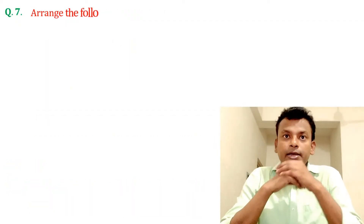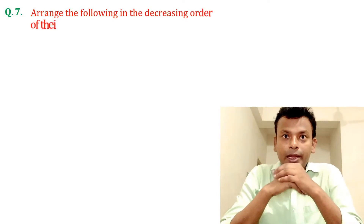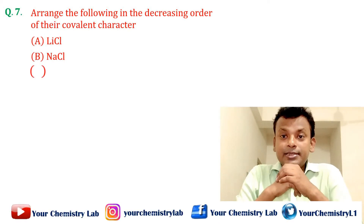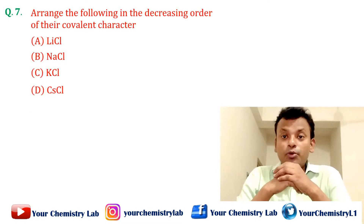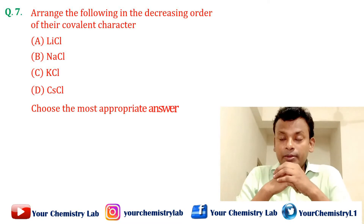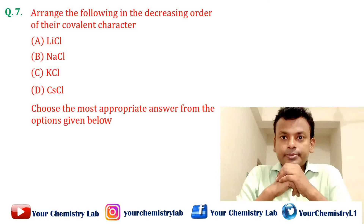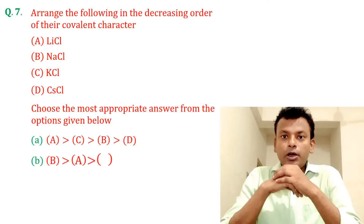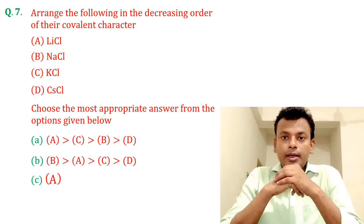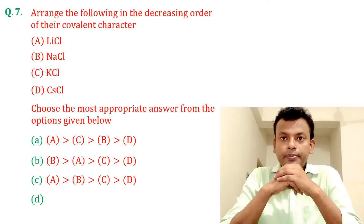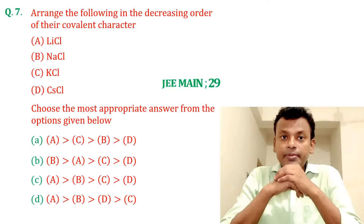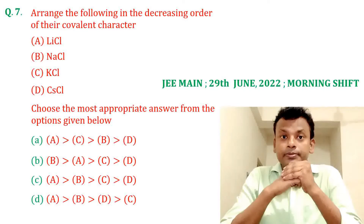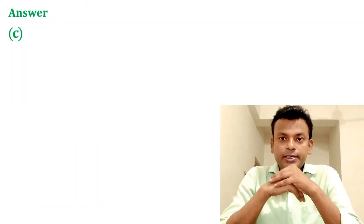Question number 7: Arrange the following in the decreasing order of their covalent character: A. LiCl, B. NaCl, C. KCl, D. CsCl. Choose the most appropriate answer from the options given below. This question was set in JEMN 29th June 2022 Morning Shift. Answer: Option C is the correct answer.